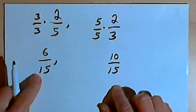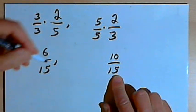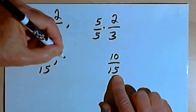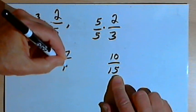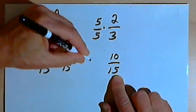So now I've got 6 over 15 and 10 over 15. And I can fit three more fractions in between there. I could fit in 7 over 15, 8 over 15,